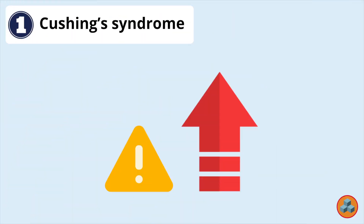Option 1: Cushing syndrome. Cushing syndrome is a condition resulting from abnormally high levels of cortisol due to endogenous overproduction of cortisol or excessive exogenous use of corticosteroids. Symptoms evolve over years and can include persistent hyperglycemia, growth failure, truncal obesity, purple abdominal striae, moon-shaped face, and weakness.